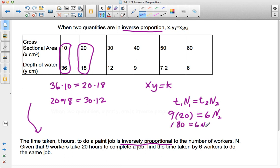So I have 9 times 20 is 180. And that equals 6n. I want to get n₂ by itself, I want to isolate my variable, so I'm dividing both sides by 6. 180 divided by 6 equals 30. So I see that the time taken by 6 workers to complete the job would be 30 hours. That's my answer.